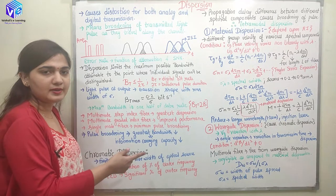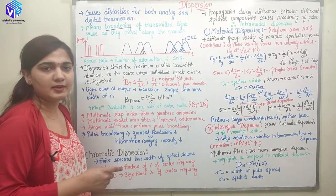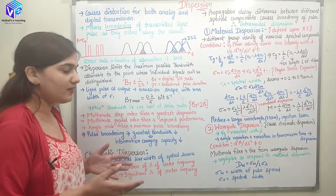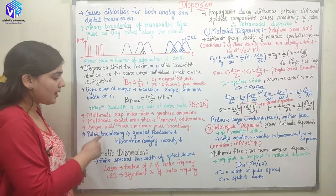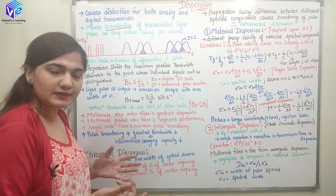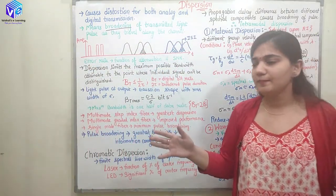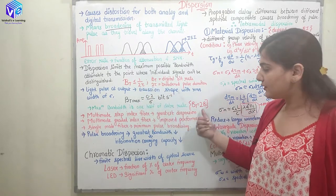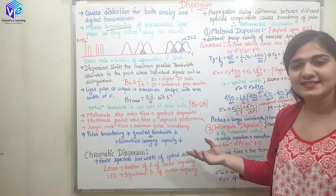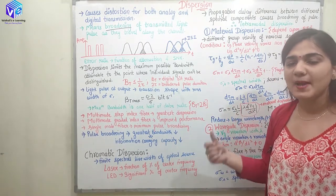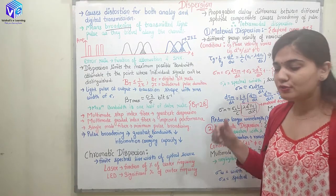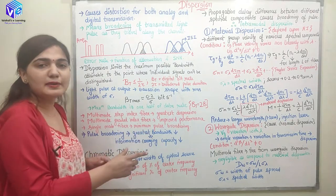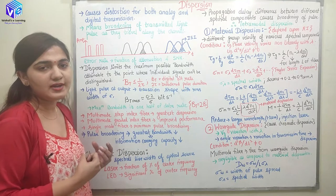If I am using the single mode fiber, I will be having the minimum pulse broadening because I have only just the single signal being transmitted through the optical fiber. Pulse broadening causes a decrease in the bandwidth — if I have a broadened pulse, the bandwidth is going to decrease. If bandwidth decreases, the information carrying capacity of the channel decreases. If I want to increase the information carrying capacity, I would increase the bandwidth and try to reduce the dispersion or broadening effect.